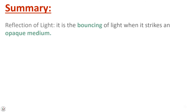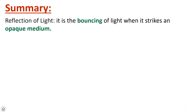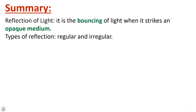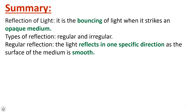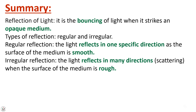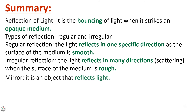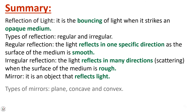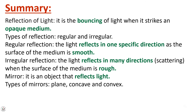Now let's make a summary. We covered: reflection of light — the bouncing of light when it strikes an opaque medium. Types of reflection — regular reflection, where light reflects in one specific direction when the surface is smooth; and irregular reflection, where light reflects in many directions (scattering) when the surface is rough. We defined mirror as an object that reflects light, and covered the three types — plane, concave, and convex — and the characteristics of each type.